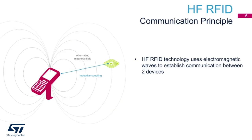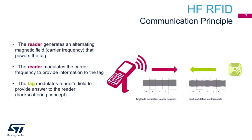HF RFID or NFC uses electromagnetic waves to communicate generally between a reader device and a passive tag, although two reader devices could communicate with each other in a peer-to-peer fashion. The reader, which in many cases is a cell phone, generates an RF carrier that powers the passive tag, much like a transformer. The reader modulates the carrier to write to the tag's EEPROM, while the tag modulates the reader's field to communicate information back.